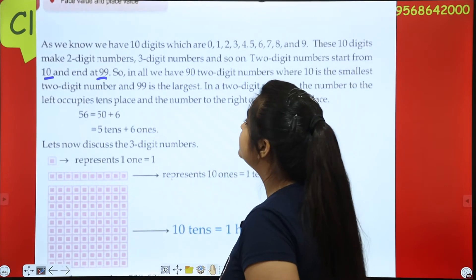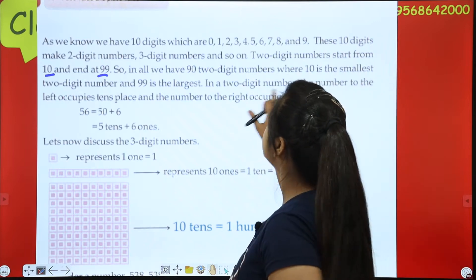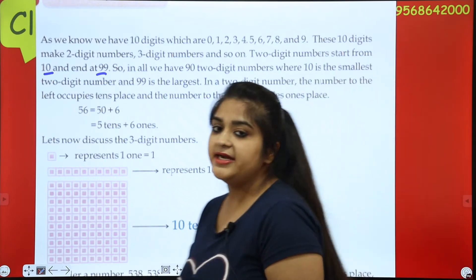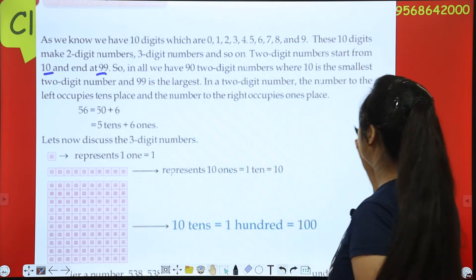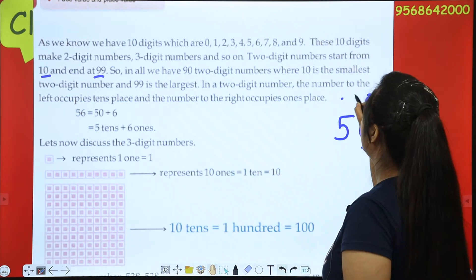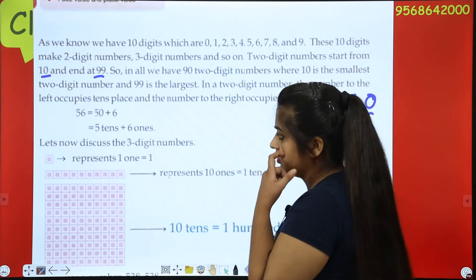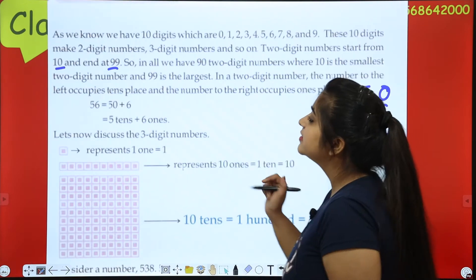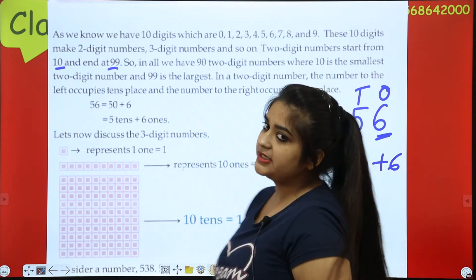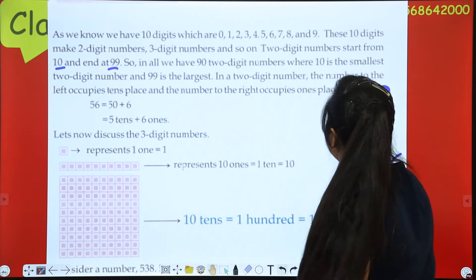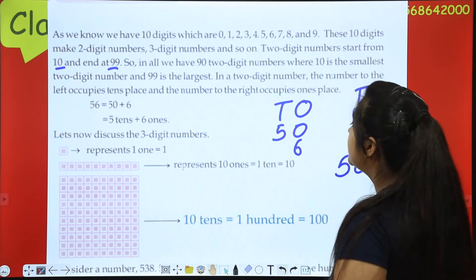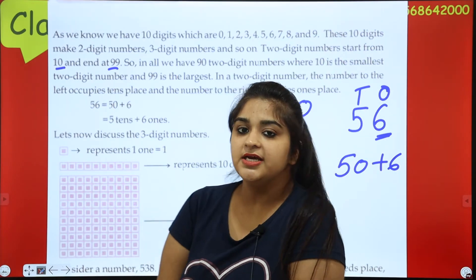So what is there to learn? In a two-digit number, the digit to the left occupies the tens place, and the digit to the right occupies the ones place. For example, if we write 56, the digit on the right is in the ones place and the digit on the left is in the tens place. So how can we write 56? 50 plus 6. Because 5 is in the tens place, it becomes 50, and 6 remains. 50 and 6 together make 56.